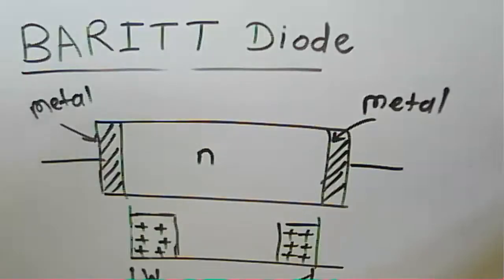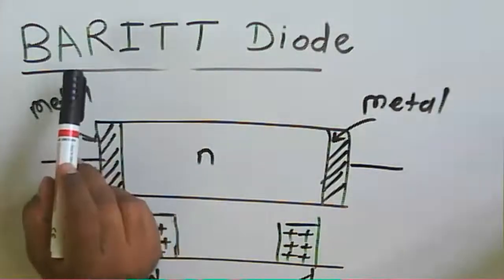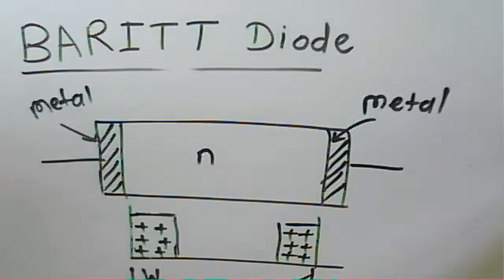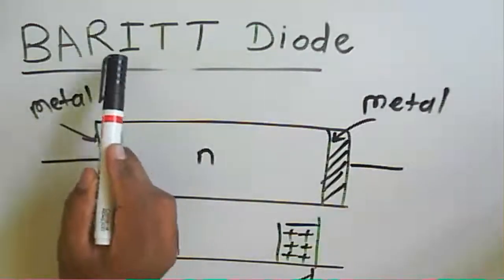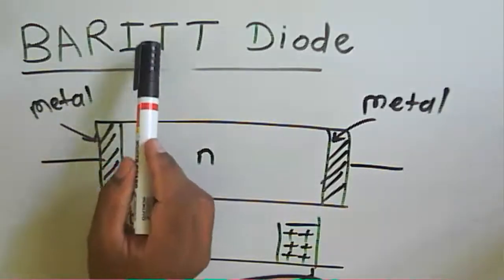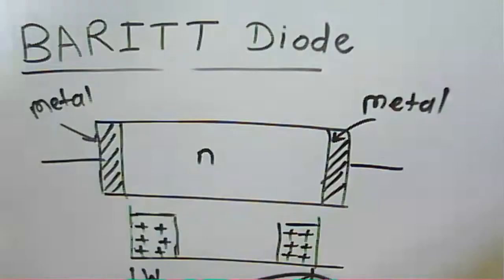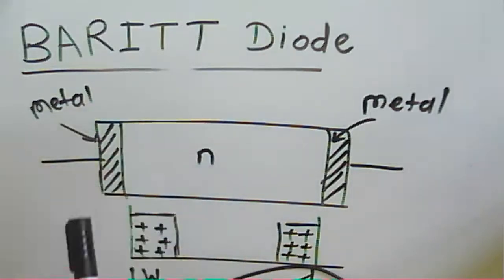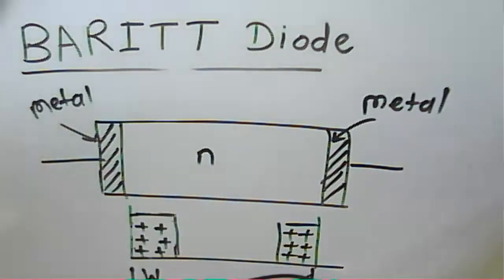Welcome to the microwave communication course. Today we will learn about the BARITT diode — the Barrier Injection Transit Time diode. The BARITT diode utilizes the injection as well as the transit time delay properties of minority carriers to produce a negative resistance at a low microwave frequency.